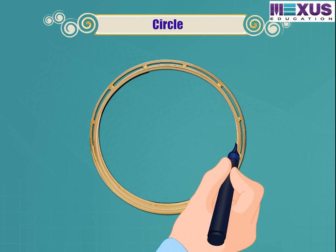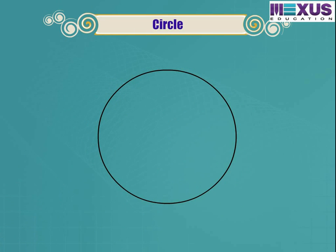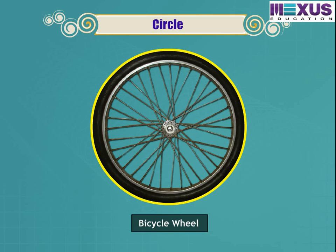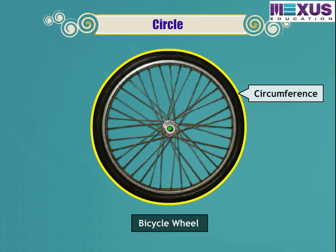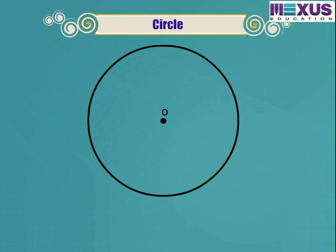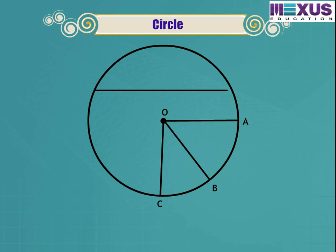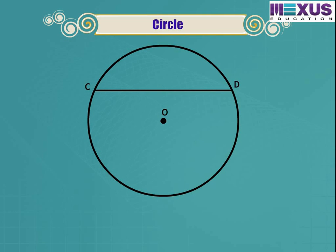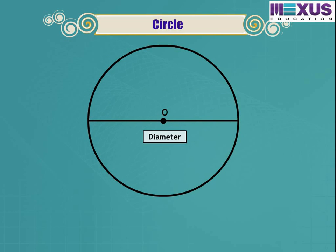If we trace a circle on paper, we get a round shape. Such a round figure is called a circle. A bicycle wheel is circle-shaped. There is a point in the middle of the wheel called the center of the circle. The length of the curved edge is called the circumference of the circle. The distance from the center to any point on the circle is called its radius. Here, O is the center and OA, OB, and OC are radii of the circle. The line joining any two points on the circumference is called a chord of the circle. Line segments CD and AC are chords of the circle.